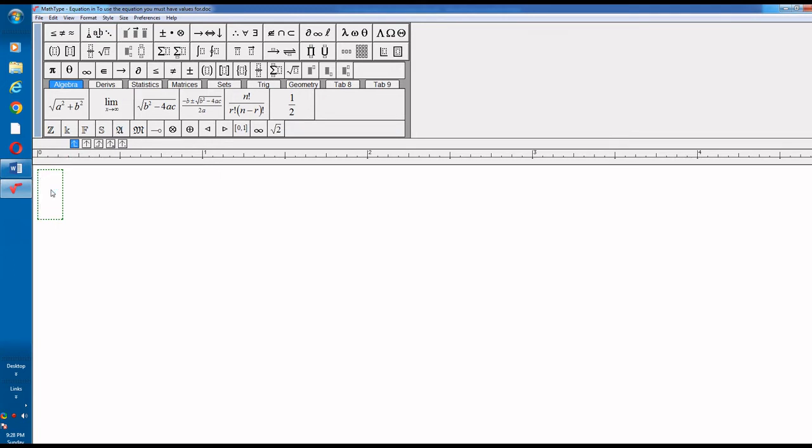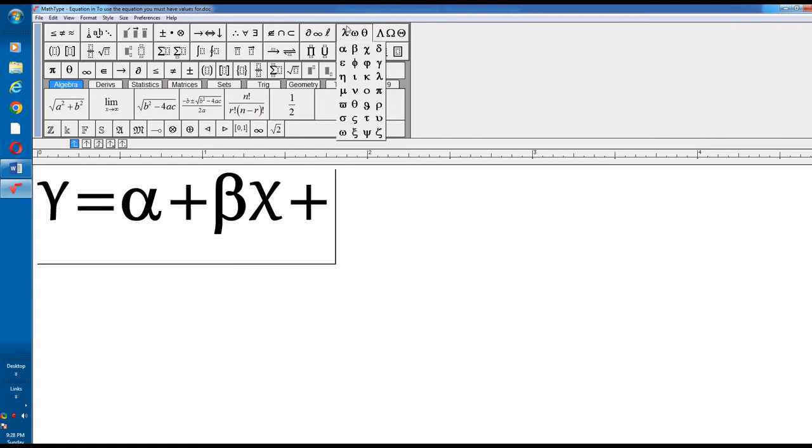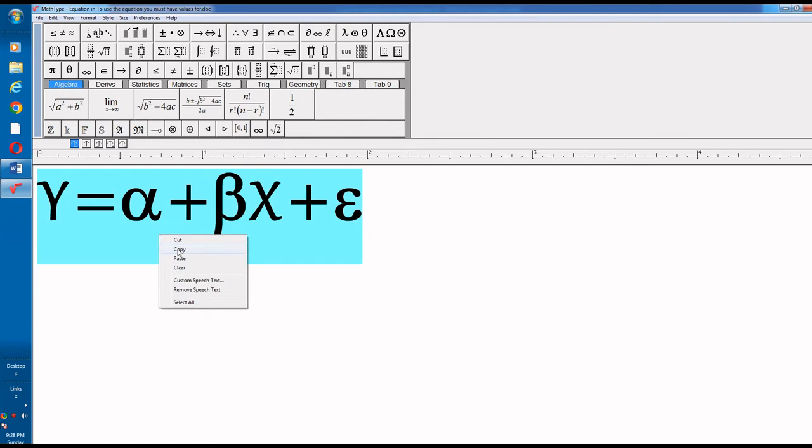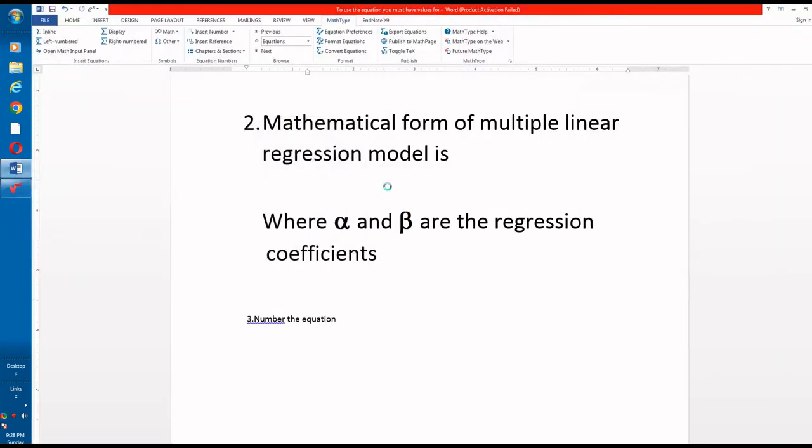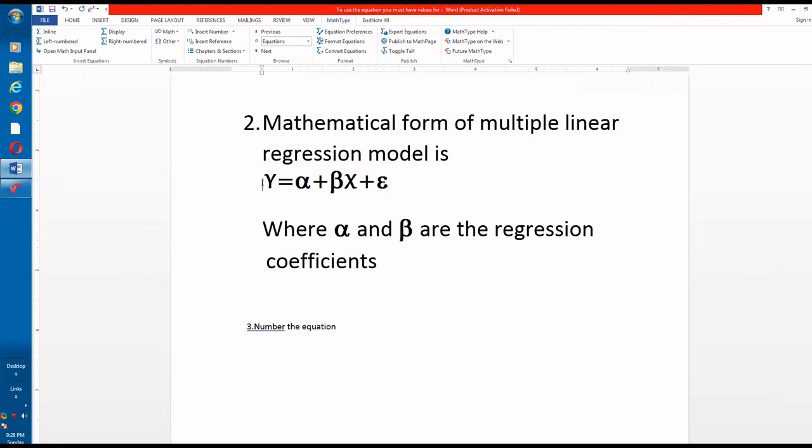Click on display and here you write your equation in the similar fashion as you write in inline equation. Control space, alpha plus beta x plus epsilon. Copy and paste. So this is the equation.